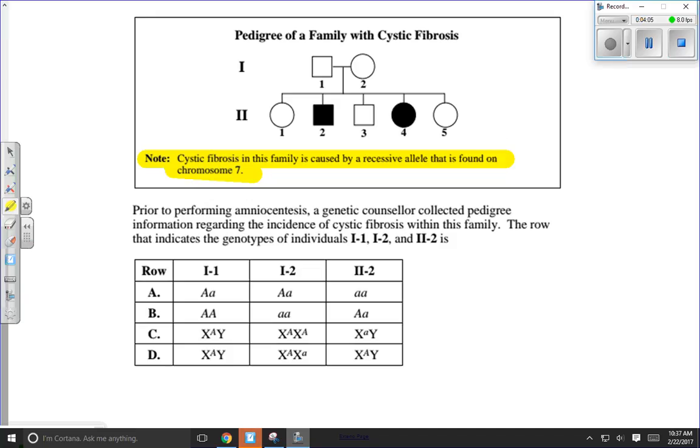Cystic fibrosis in this family is caused by a recessive allele found on chromosome 7. So it's a recessive allele. It's telling us that. We didn't necessarily need them to tell us that. We have that information in the pedigree chart. We have an individual with the trait. We have neither parent with the trait. Therefore, this is definitely a recessive trait. So we've got that. We did not need to have that note, technically.